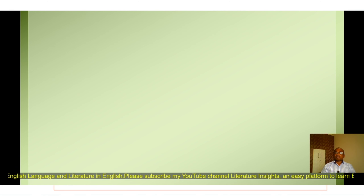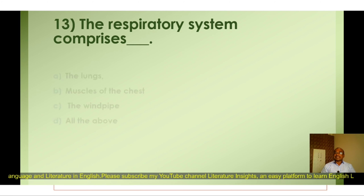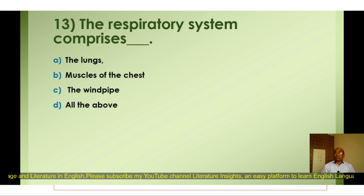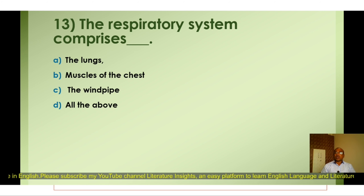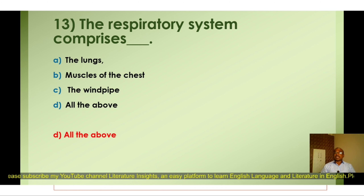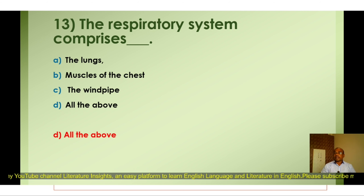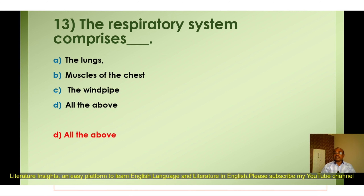Question number thirteen: The respiratory system comprises — A) The lungs, B) Muscles of the chest, C) The windpipe, D) All the above. The correct option is D) All the above. The respiratory system comprises the lungs, muscles of the chest, and the windpipe. The respiratory system means the breathing system, and these three organs are very significant in respiration.